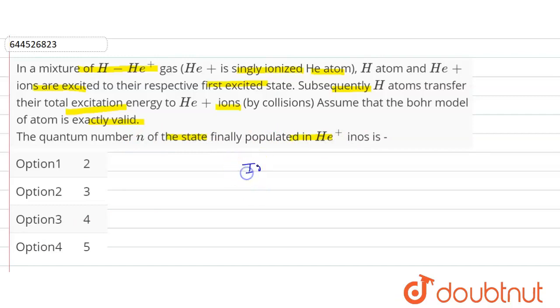So we know in hydrogen atom, hydrogen transition 1 to 2, the excitation energy is equal to 10.2 electron volts.